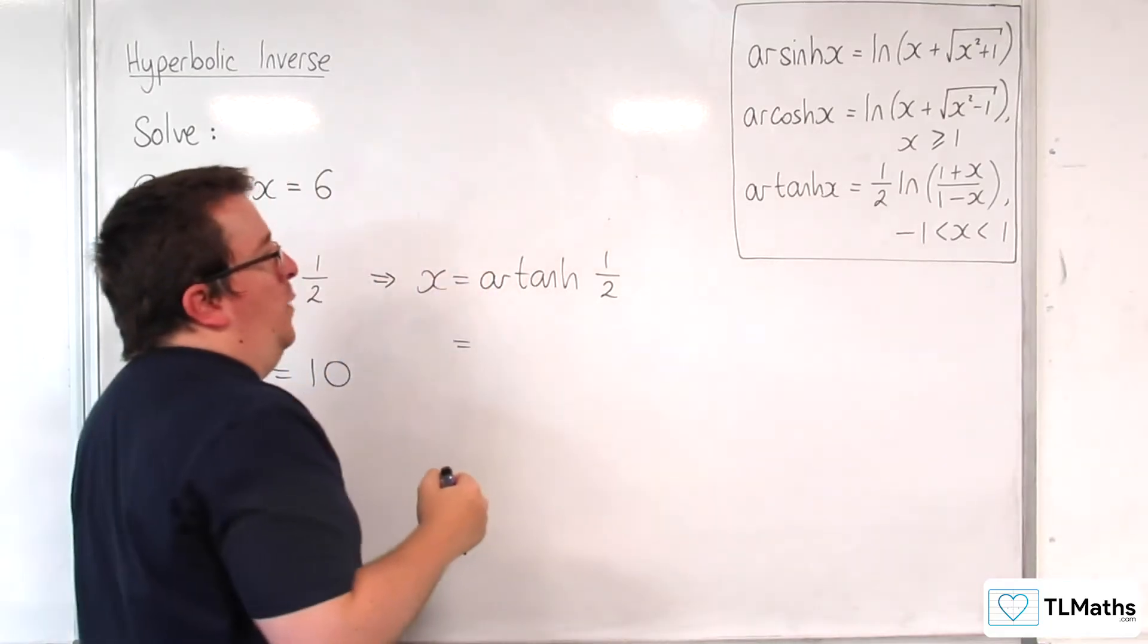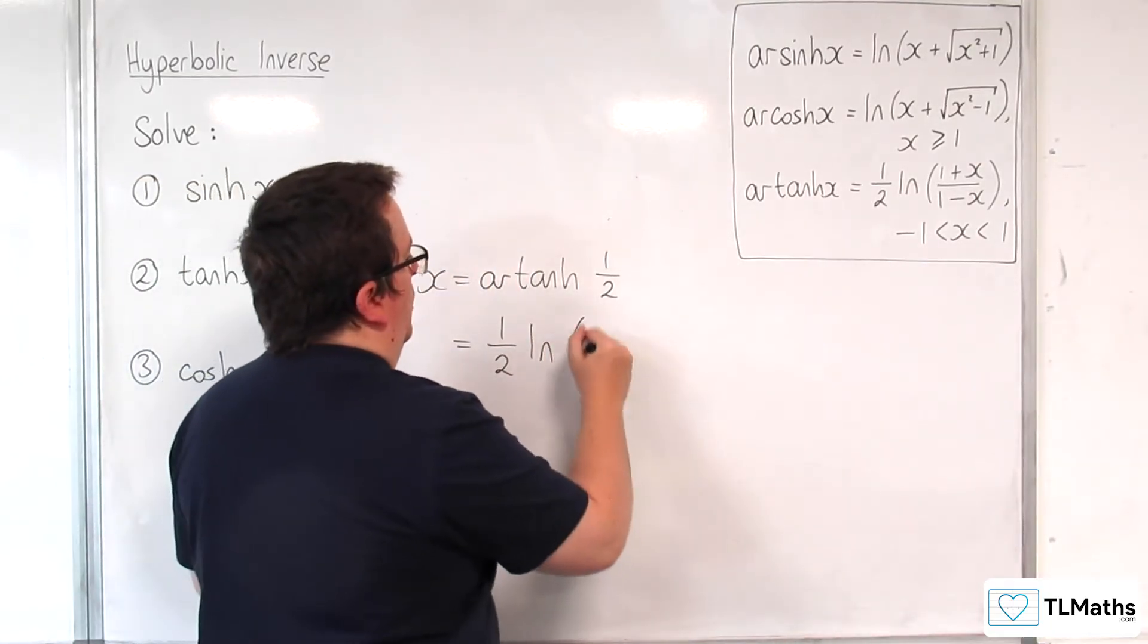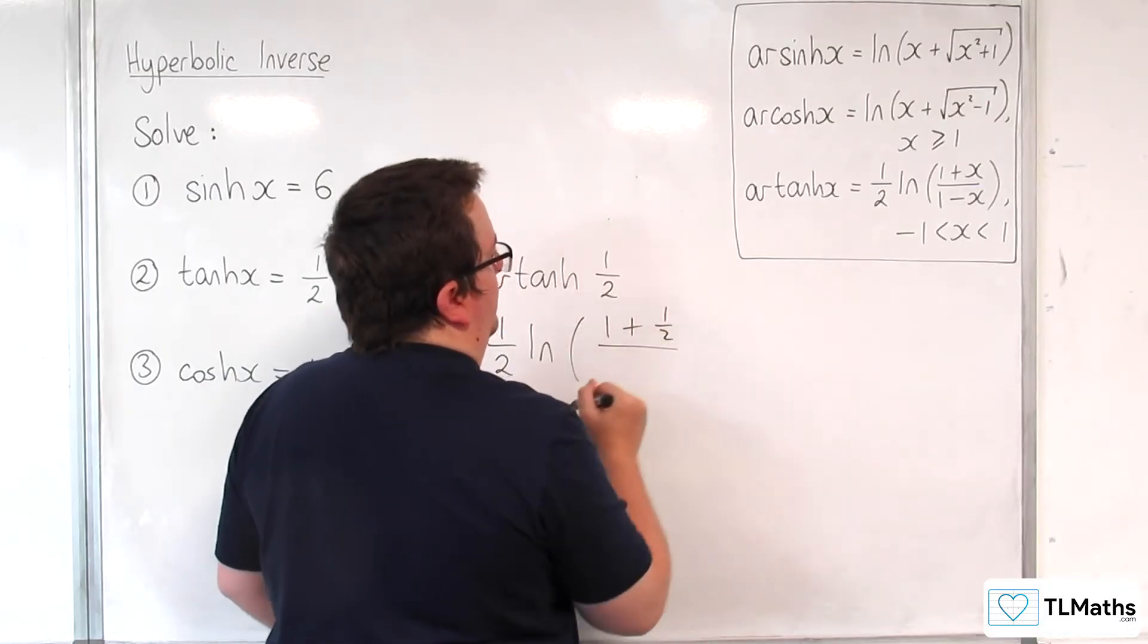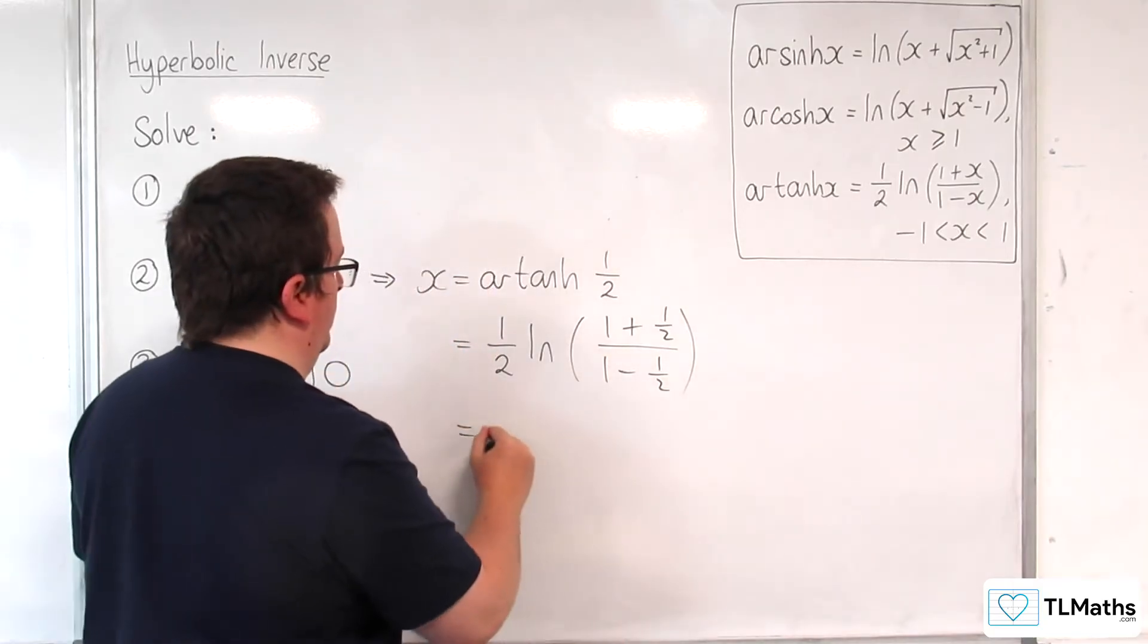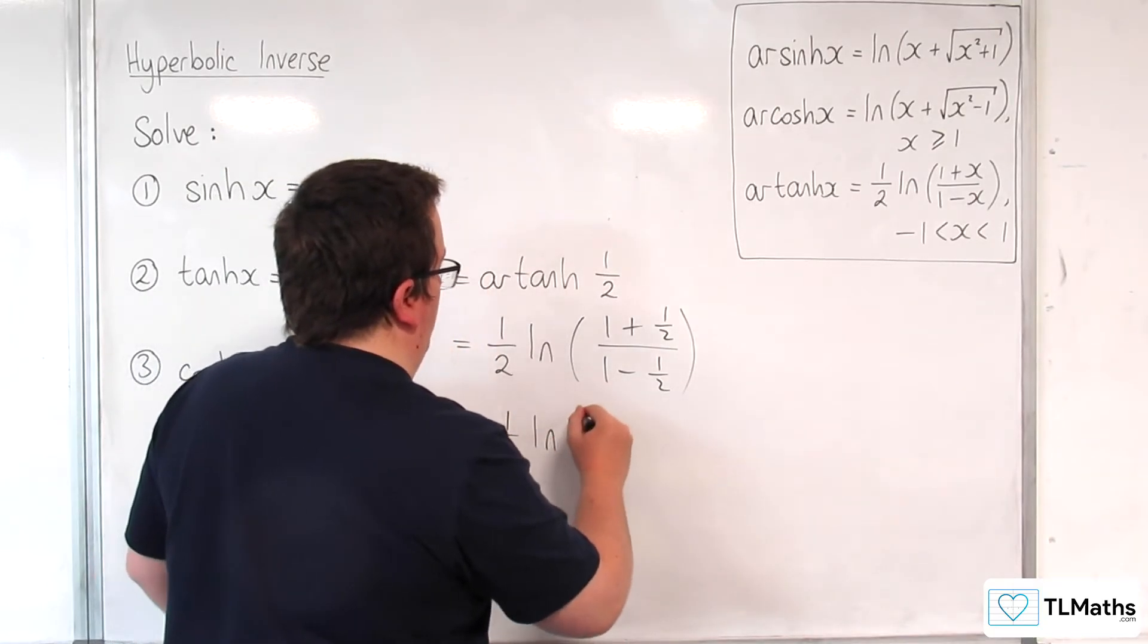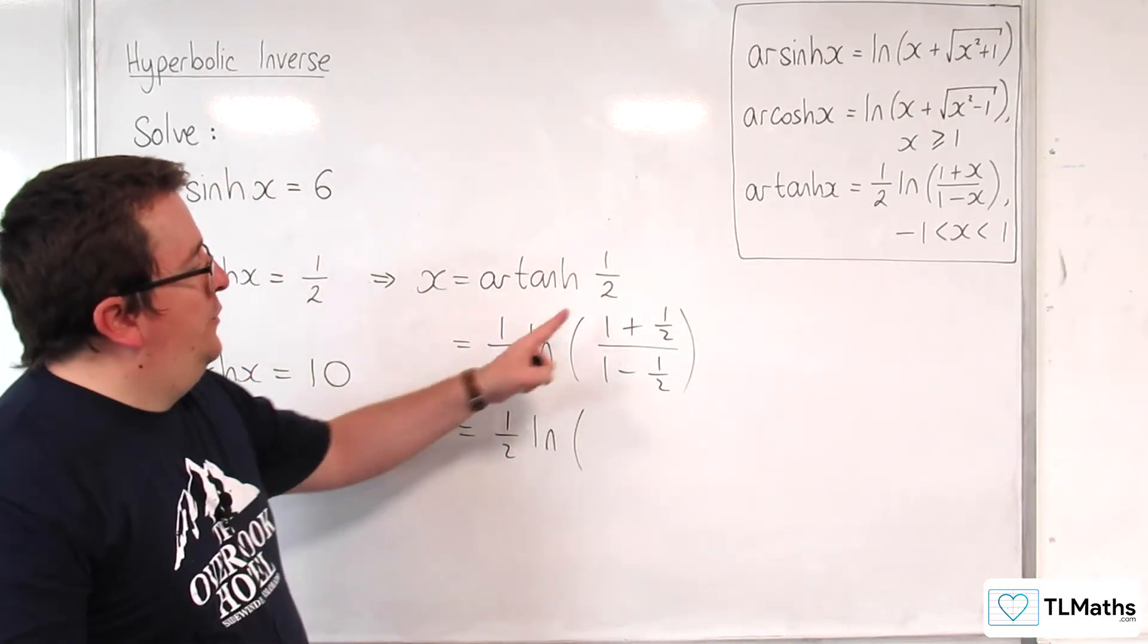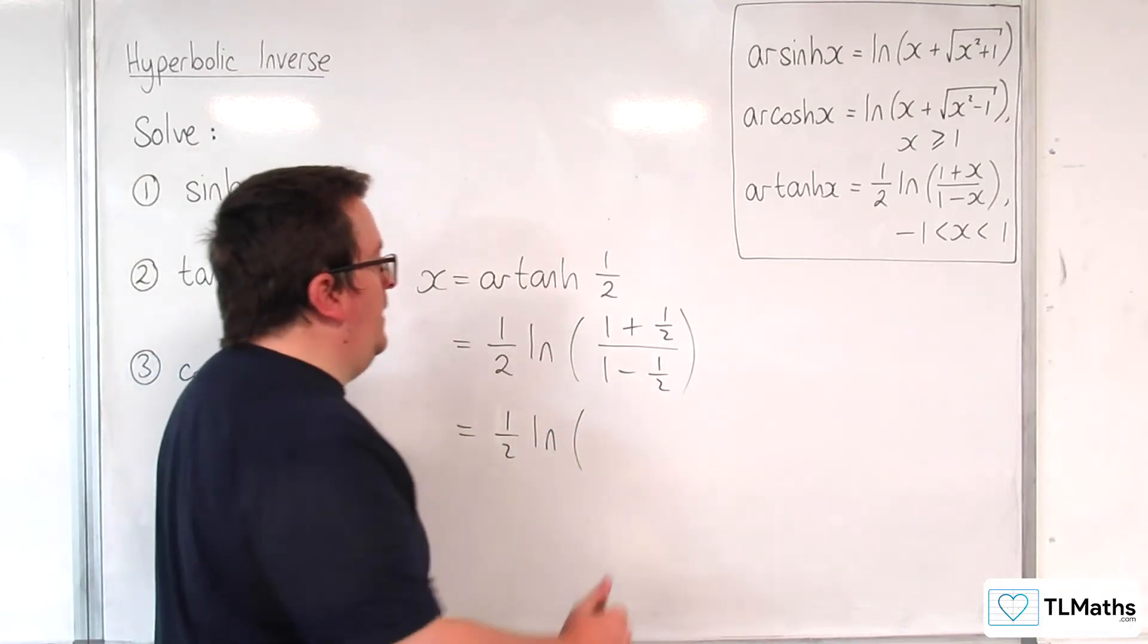I can substitute x for 1 half in there. So, 1 half the natural log of 1 plus 1 half divided by 1 take away 1 half. 1 half times the natural log of... we get 3 halves divided by 1 half, which is 3.